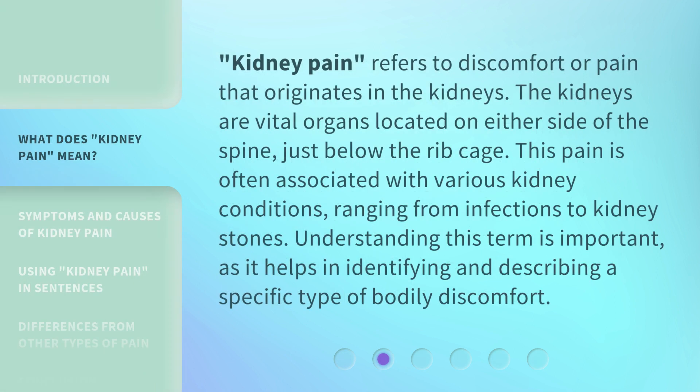Kidney pain refers to discomfort or pain that originates in the kidneys. The kidneys are vital organs located on either side of the spine, just below the rib cage. This pain is often associated with various kidney conditions, ranging from infections to kidney stones. Understanding this term is important, as it helps in identifying and describing a specific type of bodily discomfort.